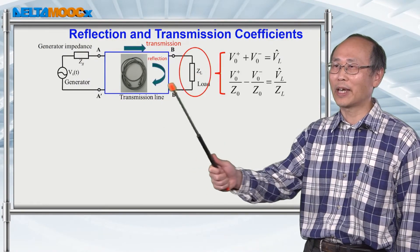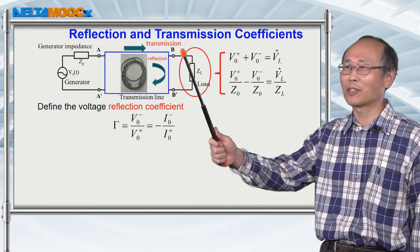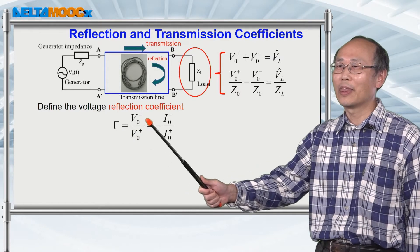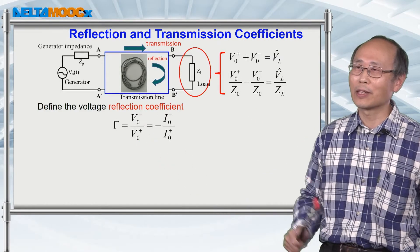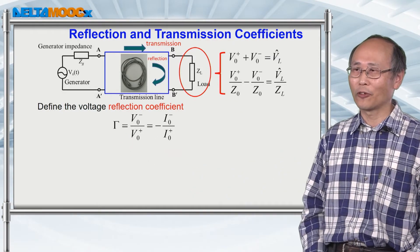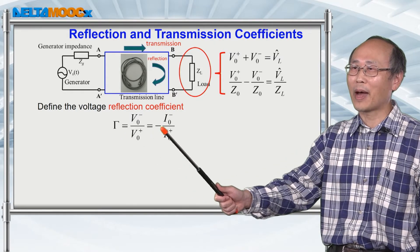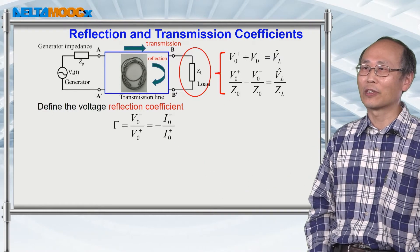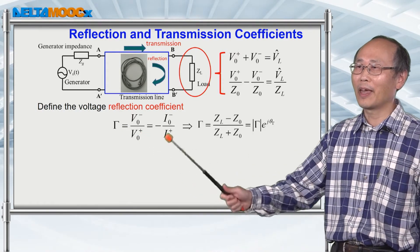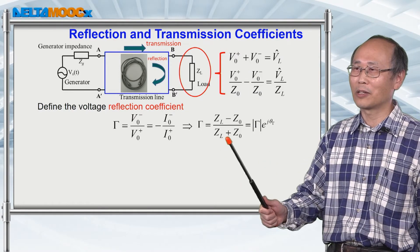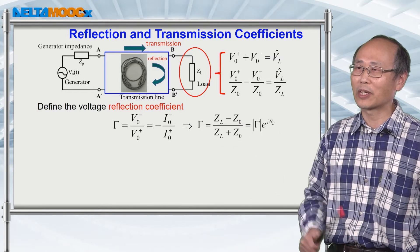Looking at the load connected to the transmission line and the two expressions we created, we want to know the reflection of the signal at this point from the load, which is defined as the backward voltage over forward voltage — because you send the voltage in the forward direction and get the backward signal. This ratio is defined as the reflection coefficient, defined through the voltage. From the two expressions, it's easy to calculate the reflection coefficient to be the load impedance minus the characteristic impedance over load impedance plus characteristic impedance.